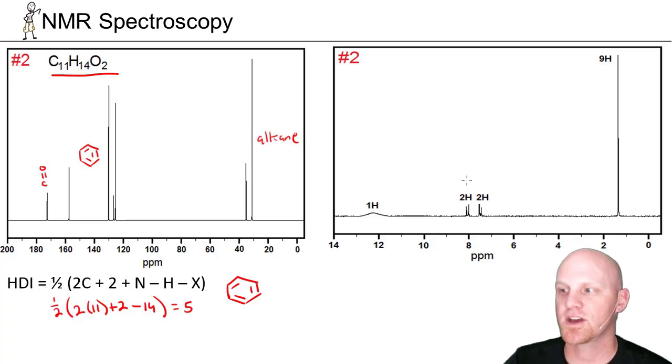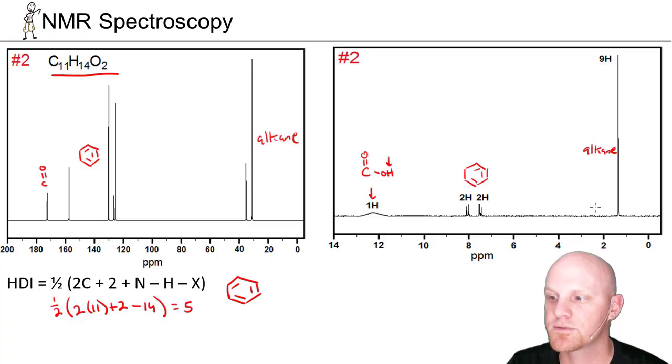If we look then at the ¹H NMR, we've got a total of 4 signals. We've got this one down here, and the only thing that shows up downfield of 10 is typically a carboxylic acid hydrogen. And then we've got the aromatic protons on a benzene ring show up around here, and then these 9 down here in the alkane region. So 1 alkane signal, 2 aromatics, and then 1 carboxylic acid signal.